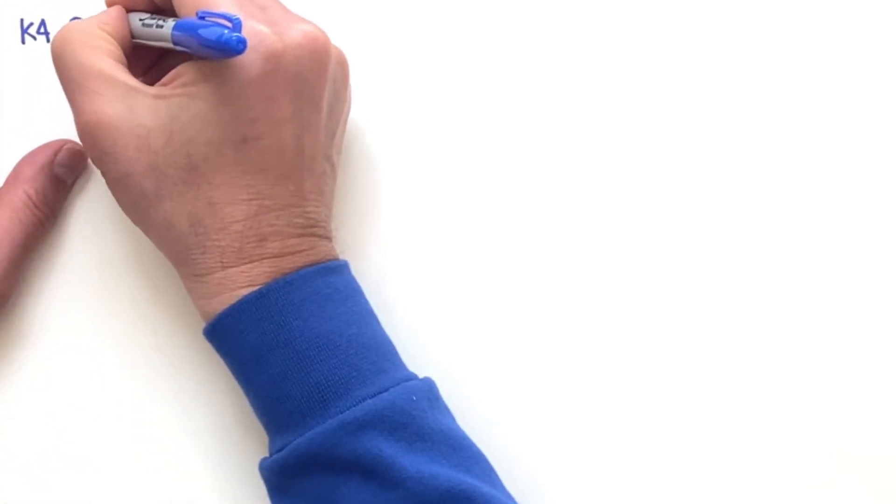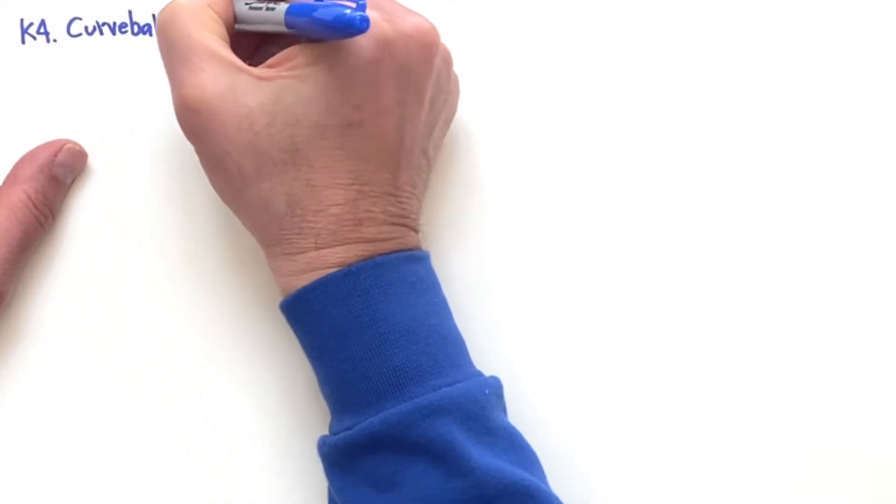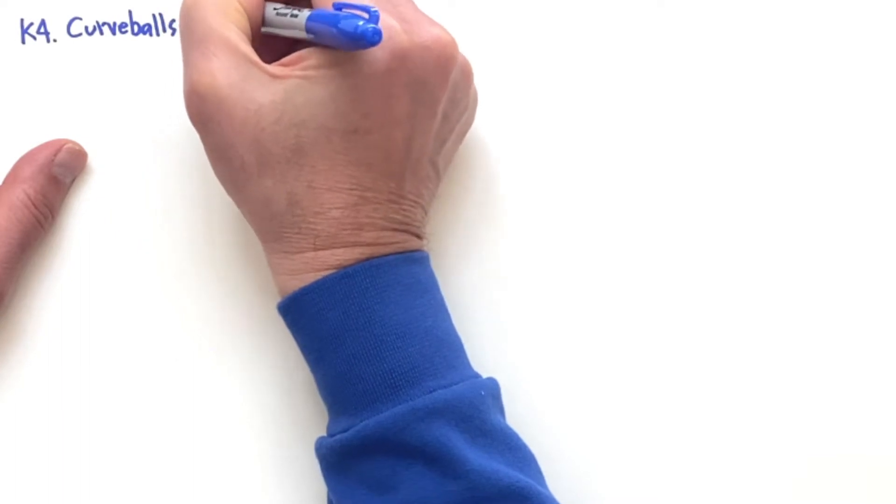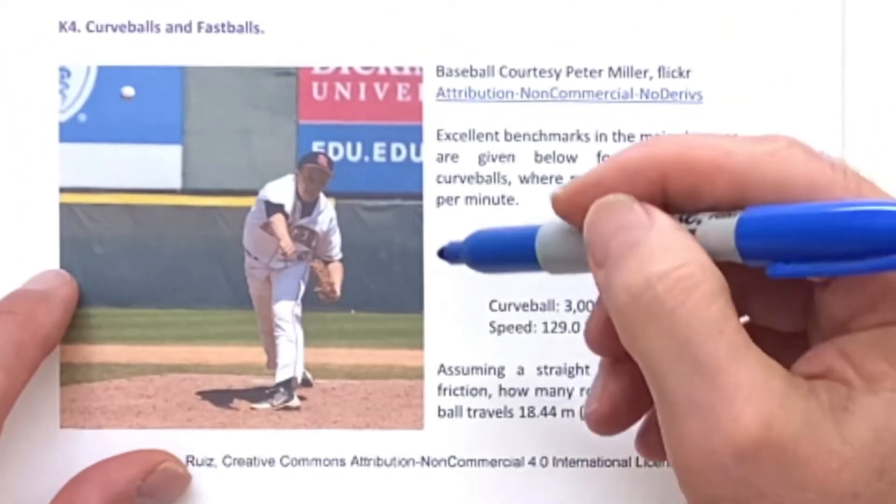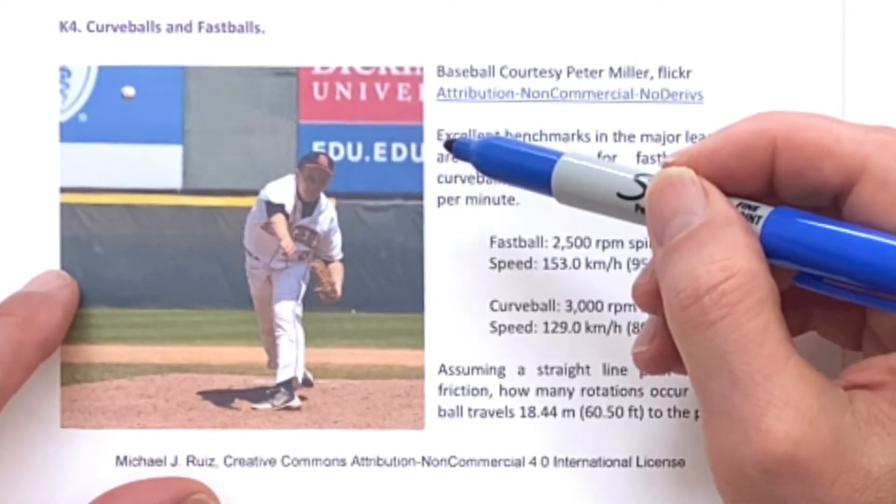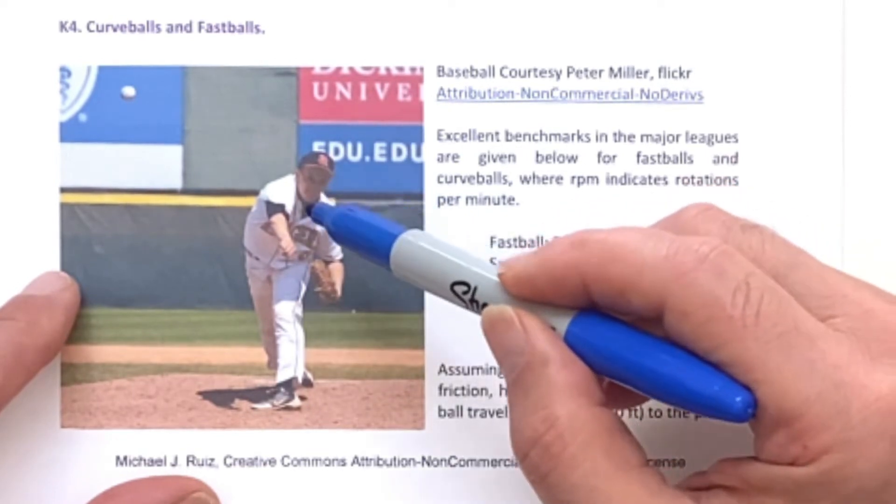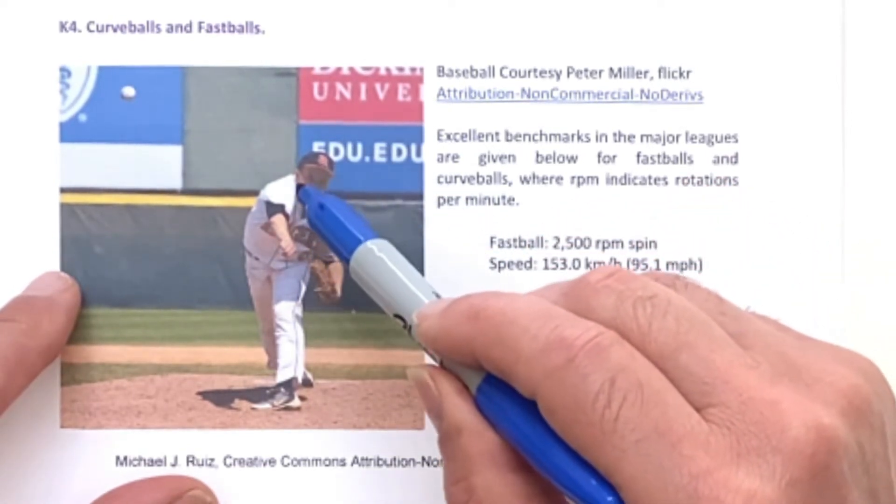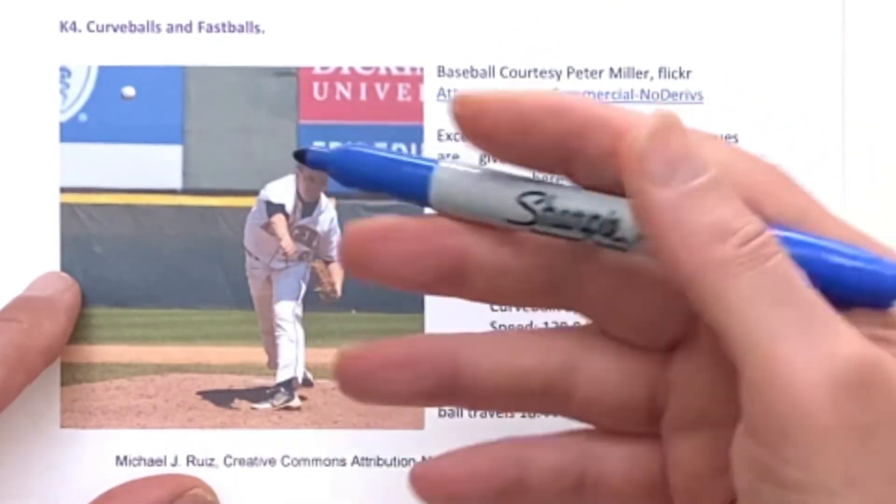K4 Curveballs and Fastballs. This is a baseball problem. It's a nice problem that lets us use some kinematics to figure out how many times the ball spins during the time it's released by the pitcher and it's caught by the catcher or it reaches the home plate.